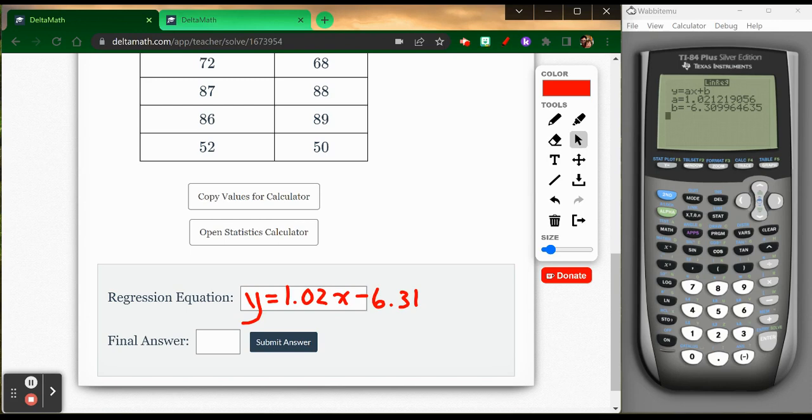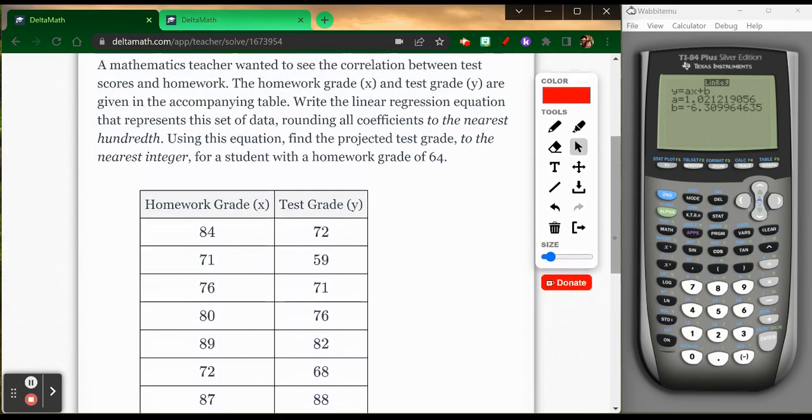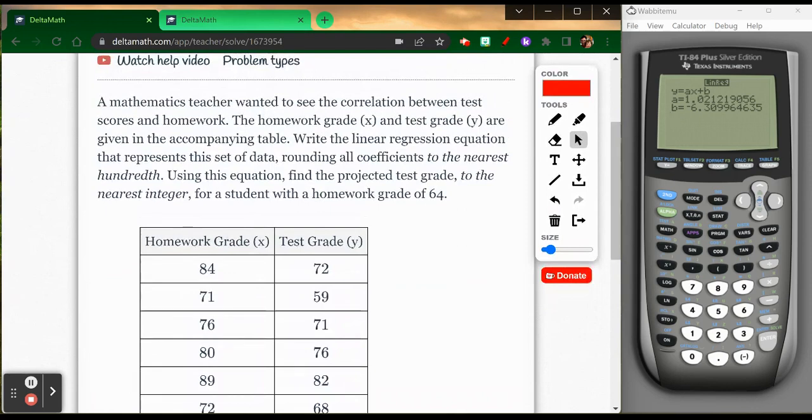And again, this is the equation of a line, Y equals MX plus B. Where the negative 6.31, this is where I cross the Y intercept. And the 1.02 is my slope equation. And so this has a slope. It's a very small slope, but it has a slope. It's positive. Now I'm going to go back up in my problem. And it tells me, using this equation, find the projected test grade for a student with a homework grade of 64.